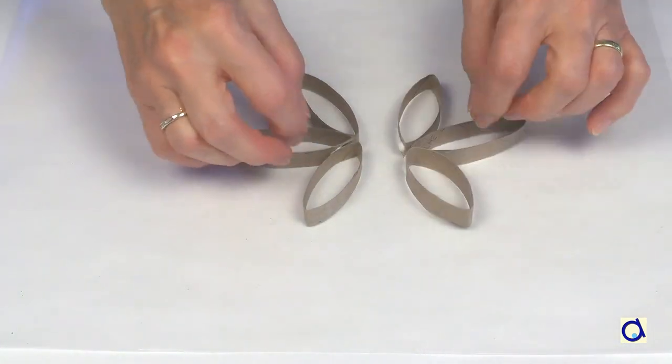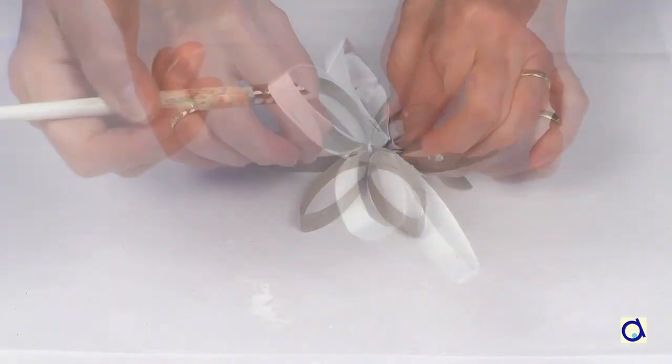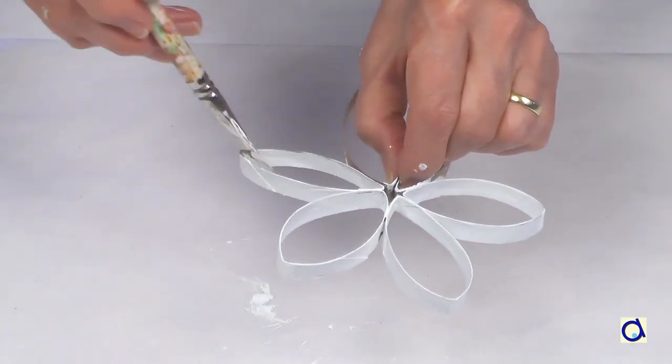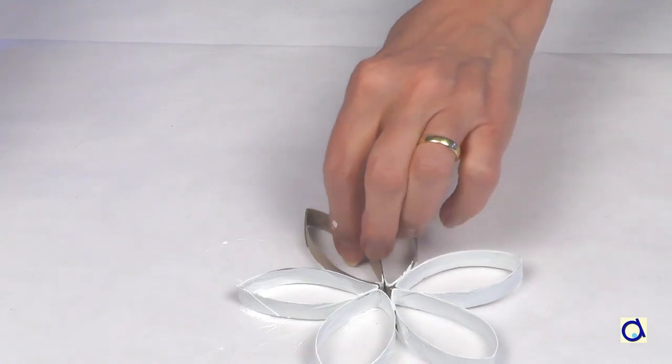When the glue is dry, glue the two halves together to form a snowflake. When the snowflake is ready, paint it white.